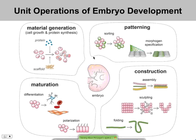Any combination of these four unit operations in a specific order would allow you to generate your tissue. You need to be able to produce materials — cells and proteins. You need to sort and pattern your cells to specify a particular outcome. You need to actually construct your tissues: maybe you assemble parts, sculpt a block, or fold a sheet into a more complex structure. And then you also have to mature your cells — differentiate them, potentially polarize them, and form specialized features such as cilia. The materials generation and maturation really represents the stem cell problem, and my lab has focused on the other two operations of patterning and construction.